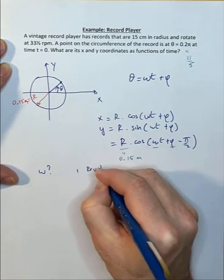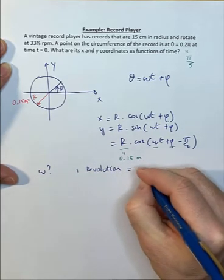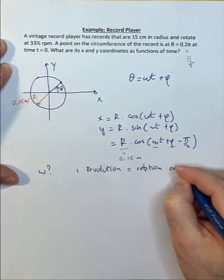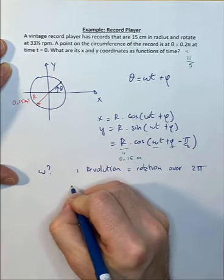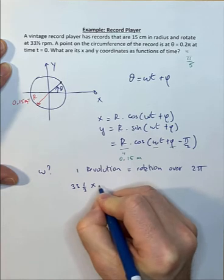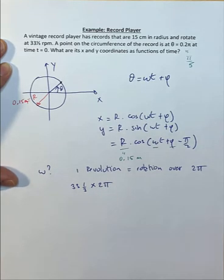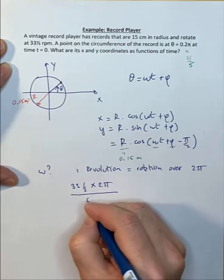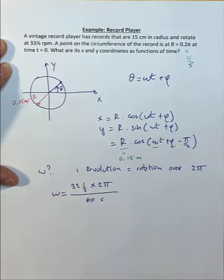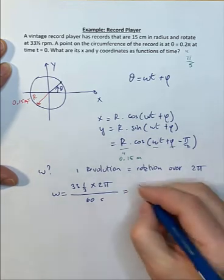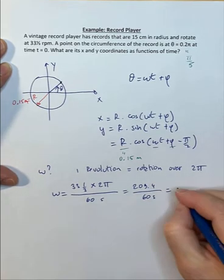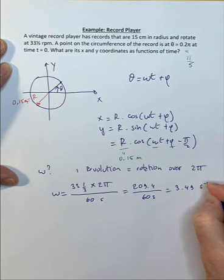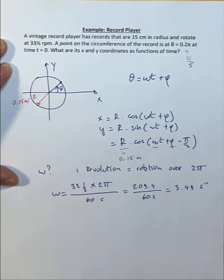One revolution means a rotation over 2π radians. If we have 33 and one-third revolutions, we have 33 and one-third times 2π radians that we turn over 60 seconds. That of course is our angular frequency. That's how many radians we turn per second. If you plug in those numbers, 209.4 divided by 60 seconds, this is 3.49 per second. That's our angular frequency omega.